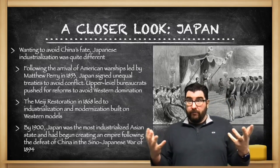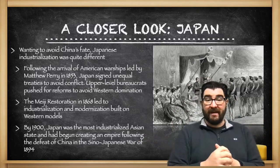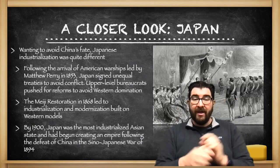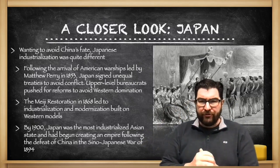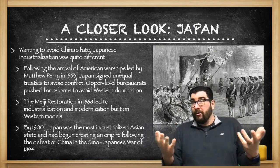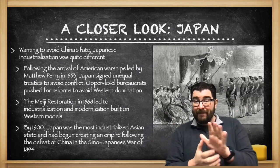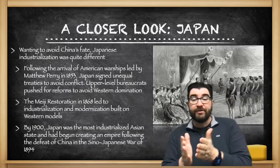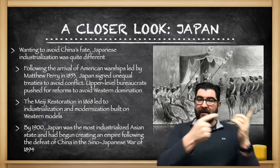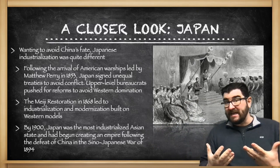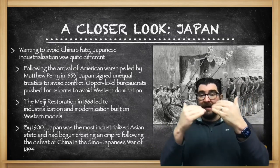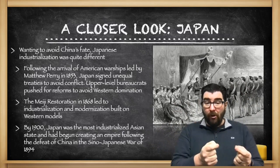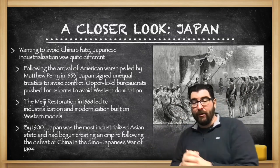Japan is the real success story of this move towards industrialization. Following the arrival of American warships led by Commodore Matthew Perry in 1853 in Tokyo Harbor, Japan was forced to sign unequal treaties — much like China had to do after the Opium Wars — to avoid greater conflict. Upper-level Japanese bureaucrats, frustrated with this bowing down to American military power, pushed for reforms to avoid the same kind of Western domination that China was experiencing. This results in what is known as the Meiji Restoration — the end of the shogunate and the rise to prominence of the Japanese emperor.